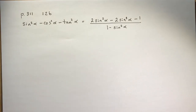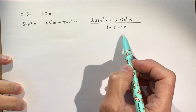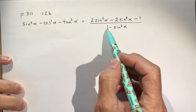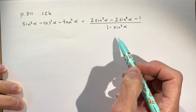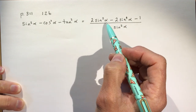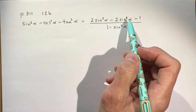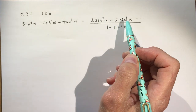I've been asked to answer 12b on page 311, which I'm going to do for you — it shouldn't take too long. If you look at the left side and the right side, you can see on this side we have a fraction with a 1 minus sine squared alpha in the denominator. In the numerator, I would look at that and see whether or not it was factorable, but I have a 4th degree and a squared function, and it's not looking very promising.